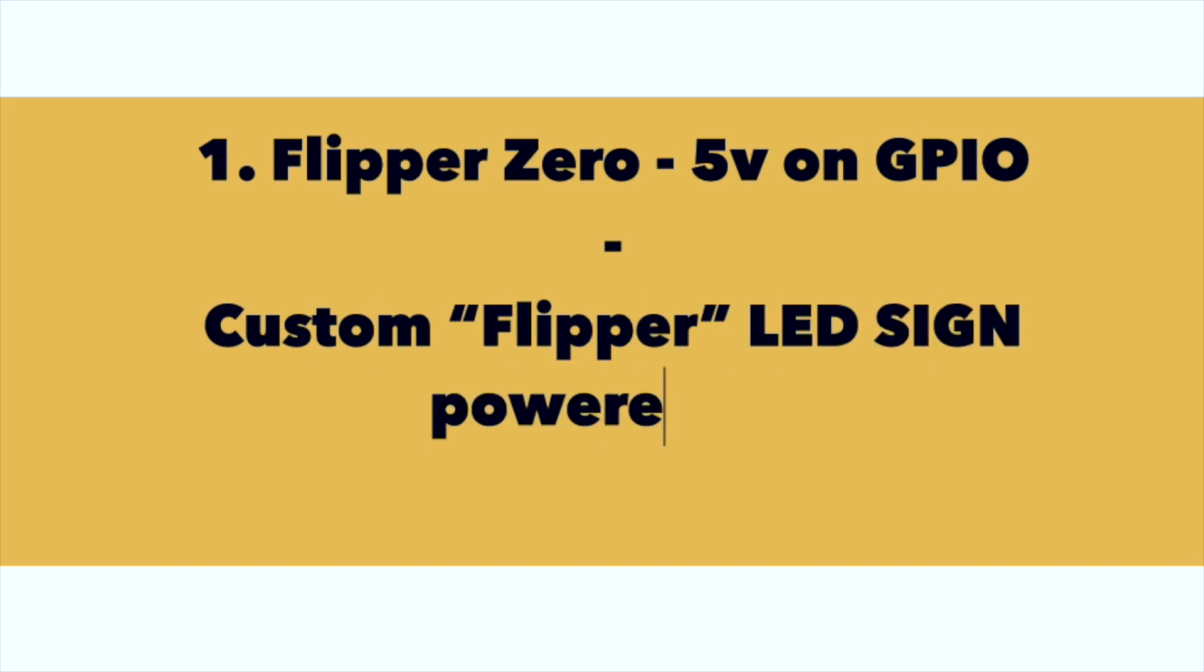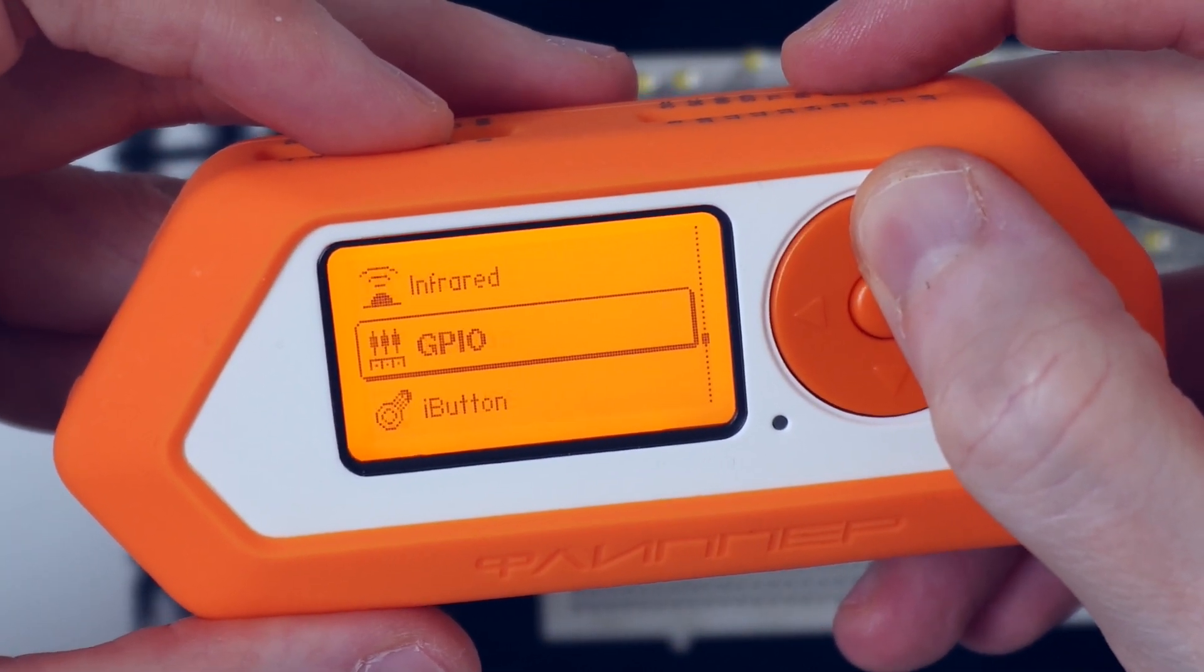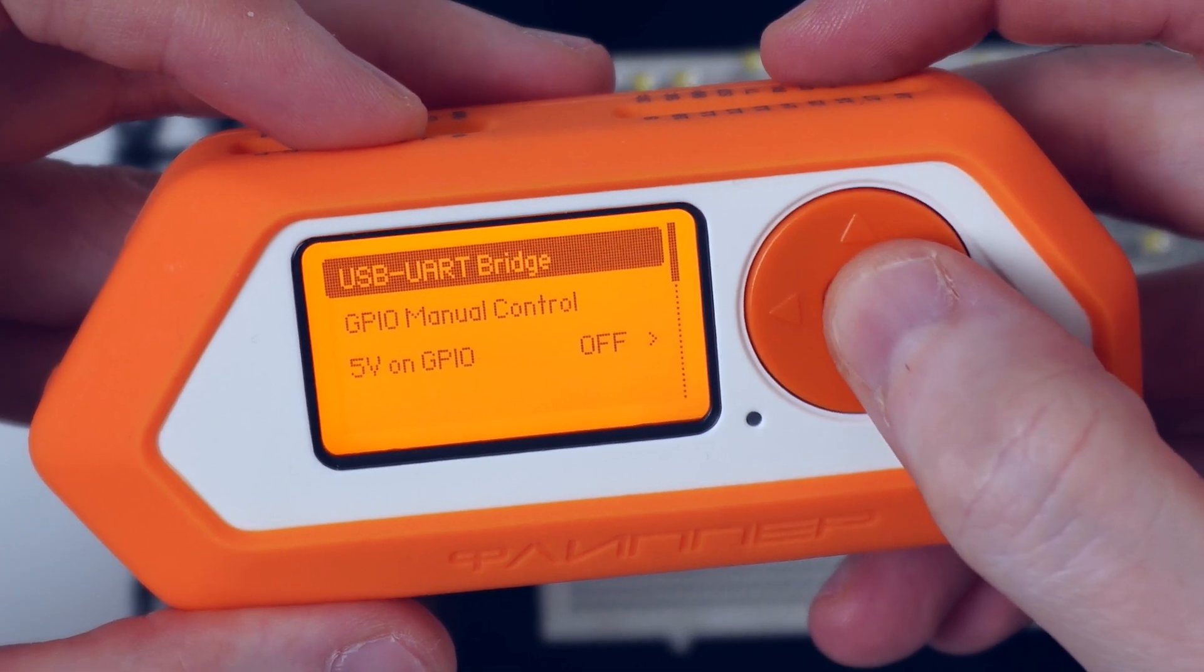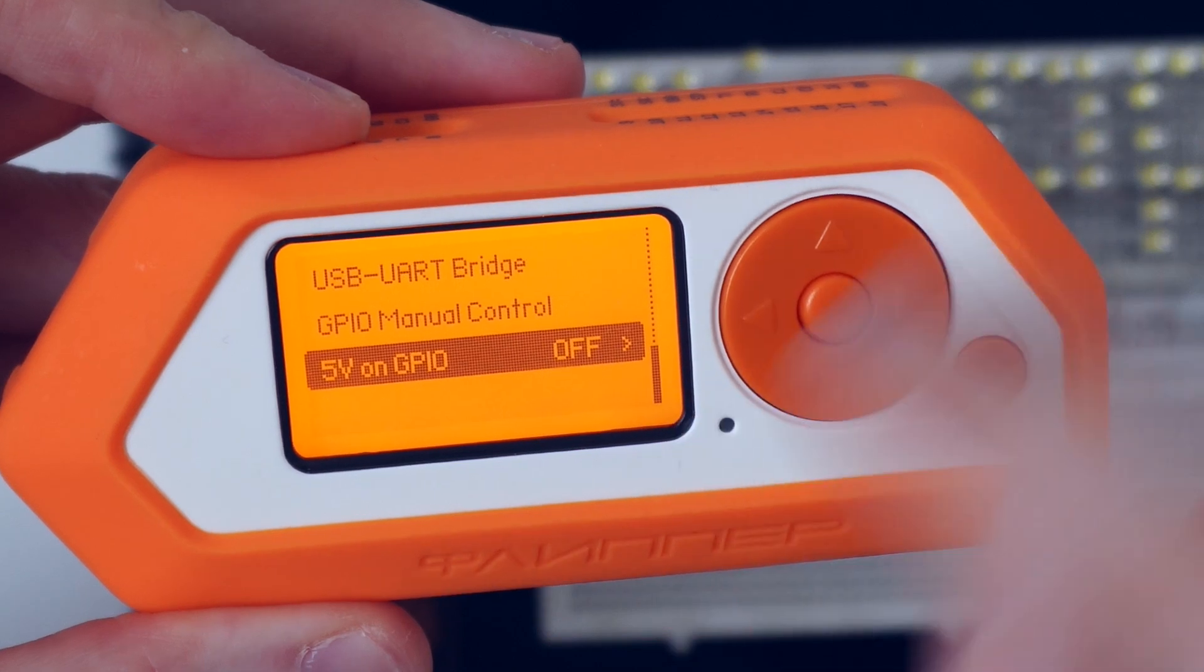Okay, let's get started. So as a first step we are going to connect the breadboard with the Flipper Zero using 5V on GPIO option. So you see on Flipper we navigate to GPIO and then select the option 5V on GPIO.